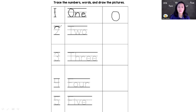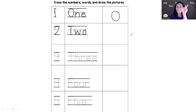This is the number symbol of two. Curve around and slide to the right — two. Make a line down, go back to the top and slide to the right. T-W-O. T-W-O. Two. Now you can draw two stars. T-W-O. Two.